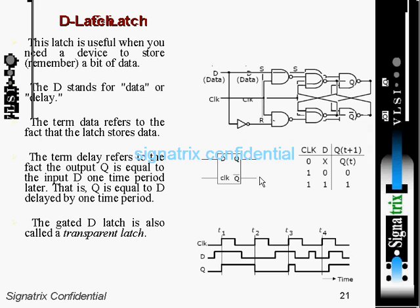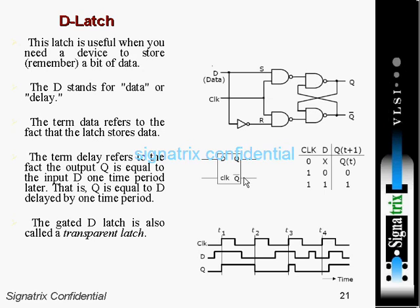For example, when accessing memory, when you give an address, you will not immediately get data. The memory takes one cycle to read the address and gives data in the next cycle — so data is delayed by one cycle relative to the address. You can use a D flip-flop to delay that data by one cycle. In industry, D flip-flops are predominantly used; you rarely see JK flip-flops. Every flip-flop delays output by one clock cycle, but D flip-flop has only one input to delay, whereas JK flip-flop has two inputs, which complicates things.